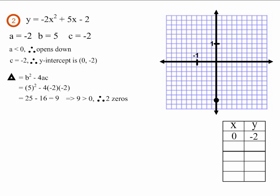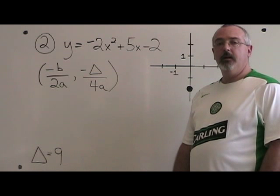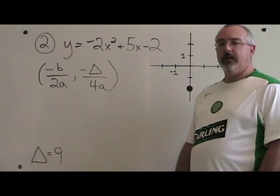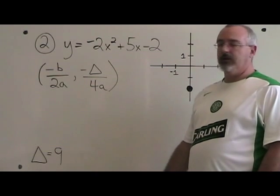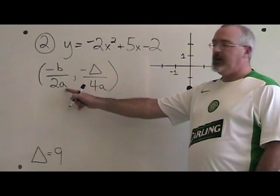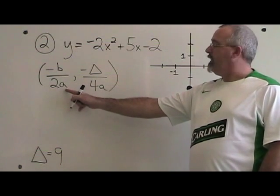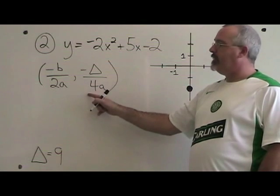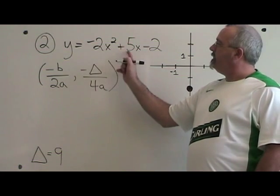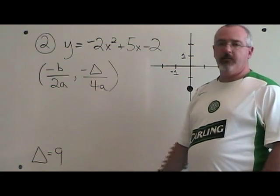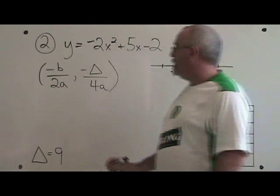This is what example 2 looks like before we find the vertex. To find the vertex of our parabola, we use the vertex formula: negative b over 2a, and negative delta over 4a. Our b is 5, so negative b will be negative 5.